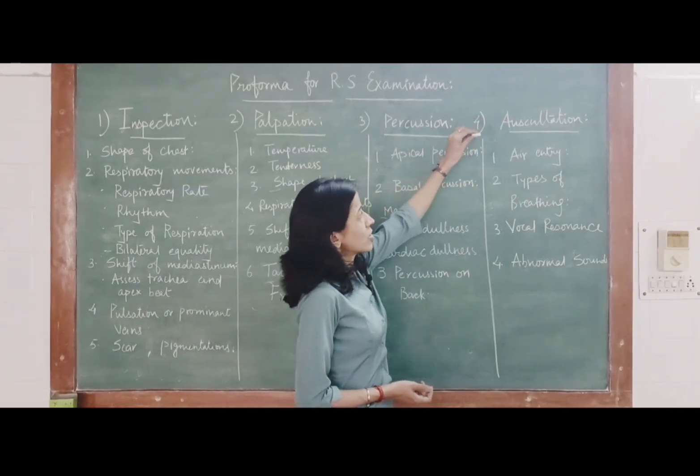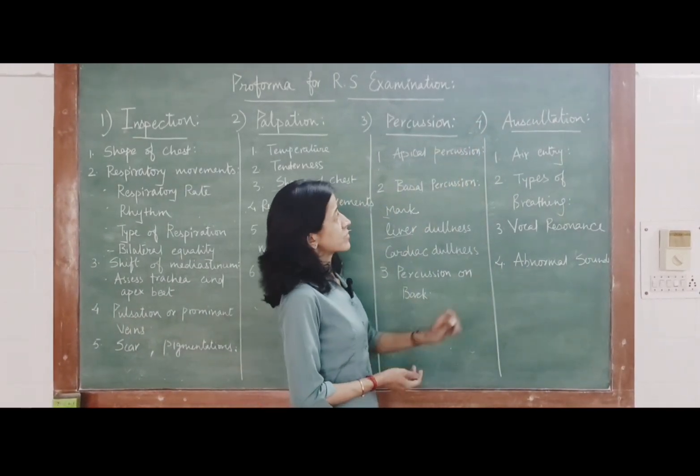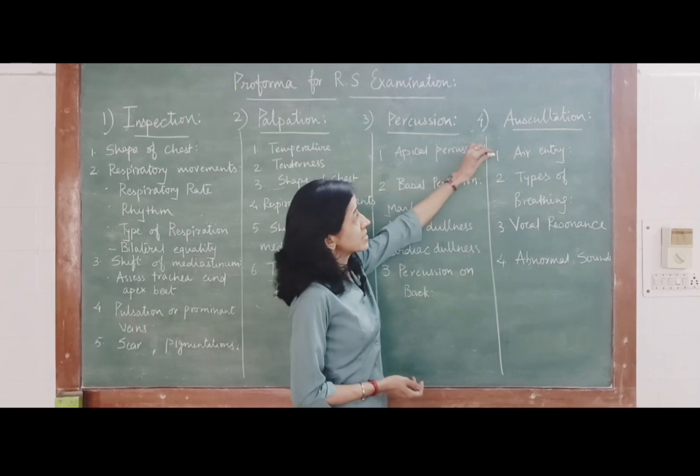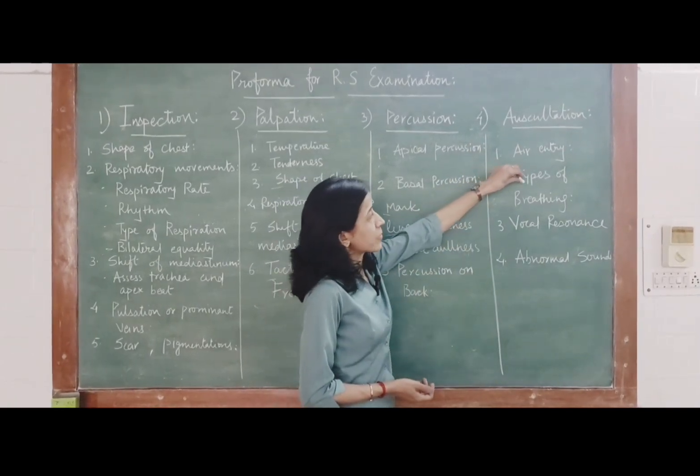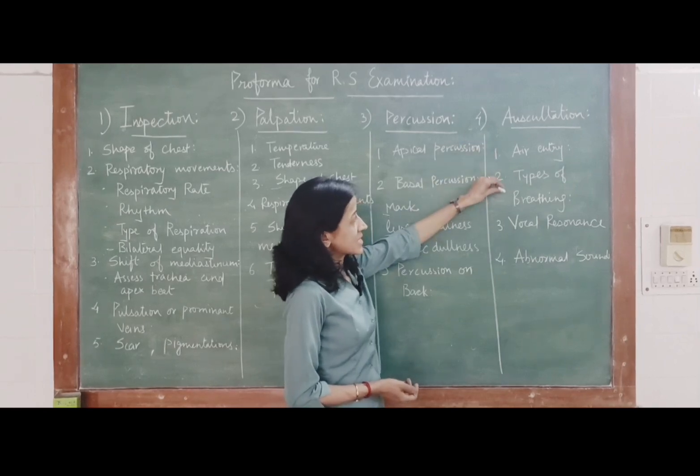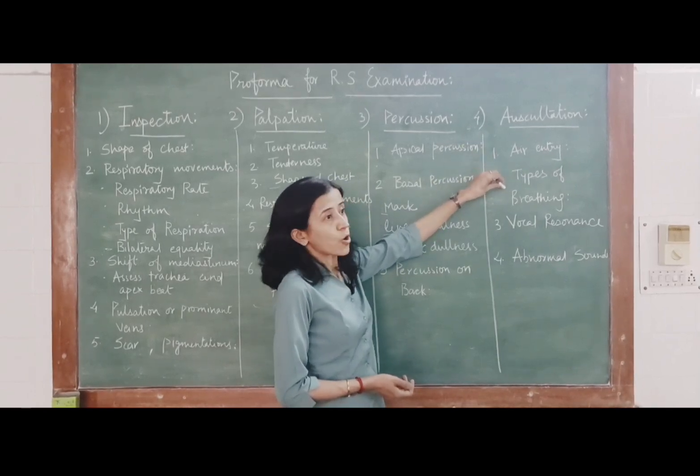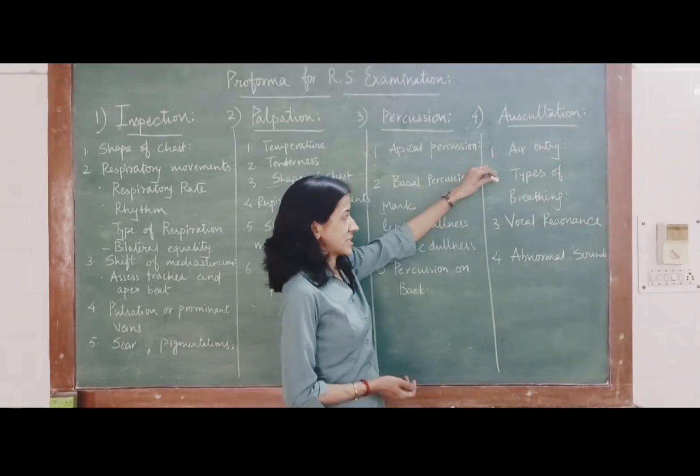Fourth, that is auscultation. In auscultation, you have to auscultate for air entry whether bilaterally it is equal or not. Second point is type of breathing, that is also to be auscultated whether it is vesicular breathing or bronchial breathing or bronchovascular breathing.